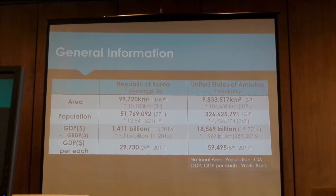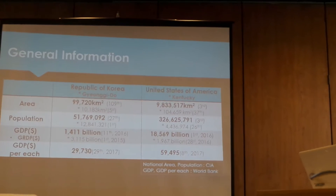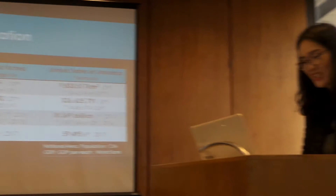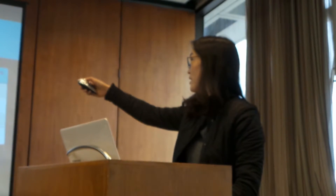I want to introduce Gyeonggi-do, where I work. Gyeonggi-do is the most populous province — its population is first in the Republic of Korea and it is a very historic area. Its name, Gyeonggi, means the area surrounding the capital, so it can be translated as the province surrounding Seoul.